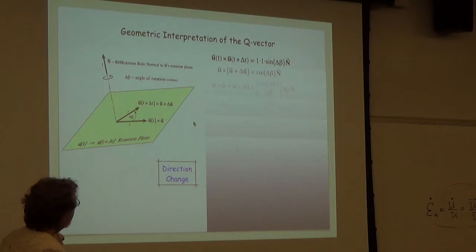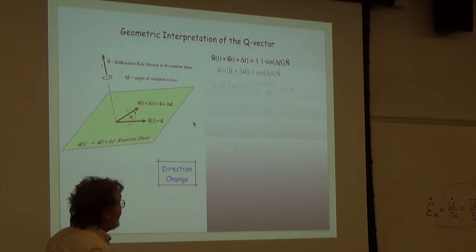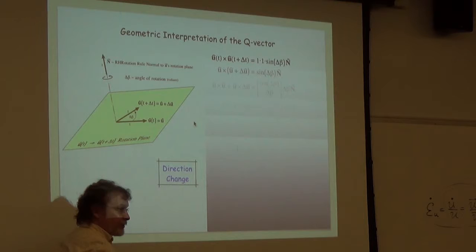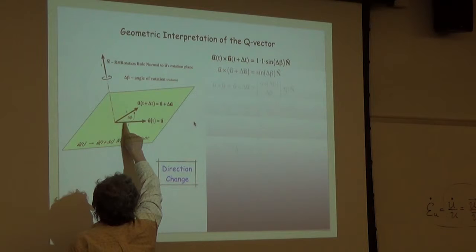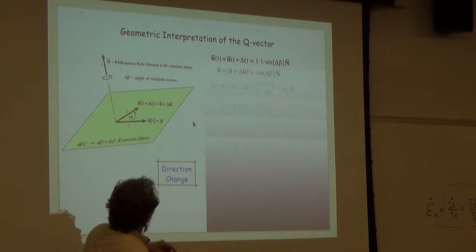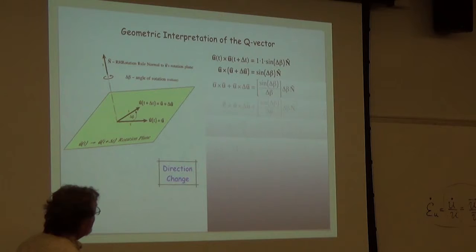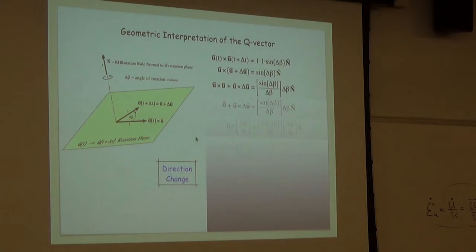This development starts with: what would we get if we cross the original unit vector with the updated value? Cross product: magnitude times magnitude times sine of the angle between them, delta beta, and the direction would be the capital N-hat. Making notational simplifications — the original value is u, the updated value is u plus delta u — expand the cross product. On the right-hand side, I've also decided to multiply and divide through by delta beta. Any vector crossed with itself is zero.